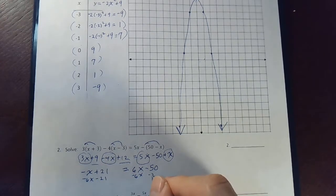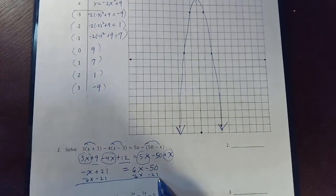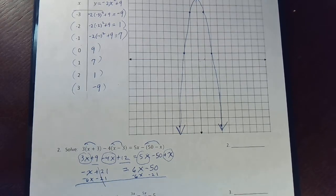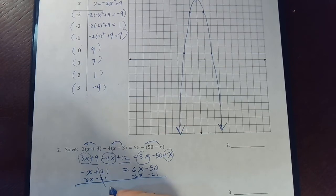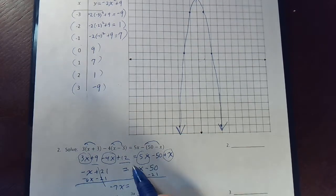I know I need to get rid of this 21 as well, so I'm going to do a minus 21 and a minus 21. All right, so that cancels, giving us a negative 7x. And that cancels, leaving us with a negative 71.